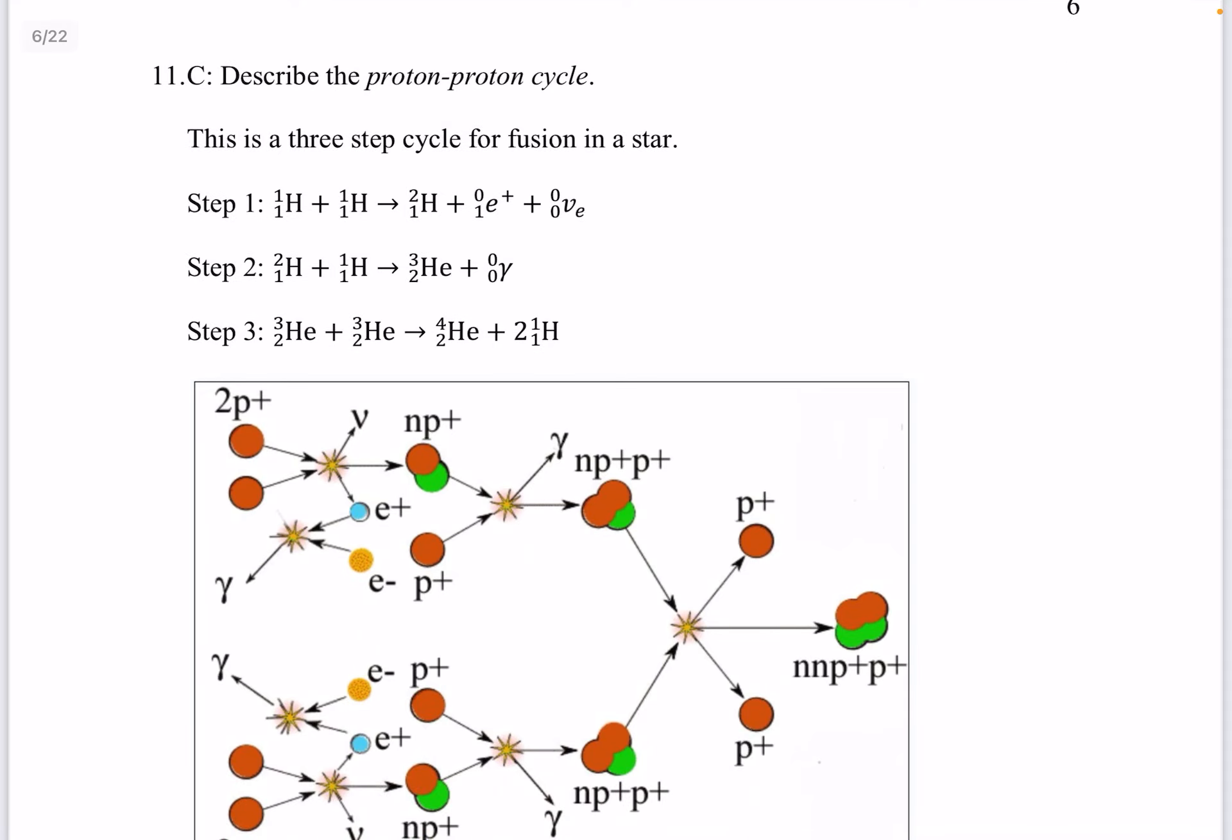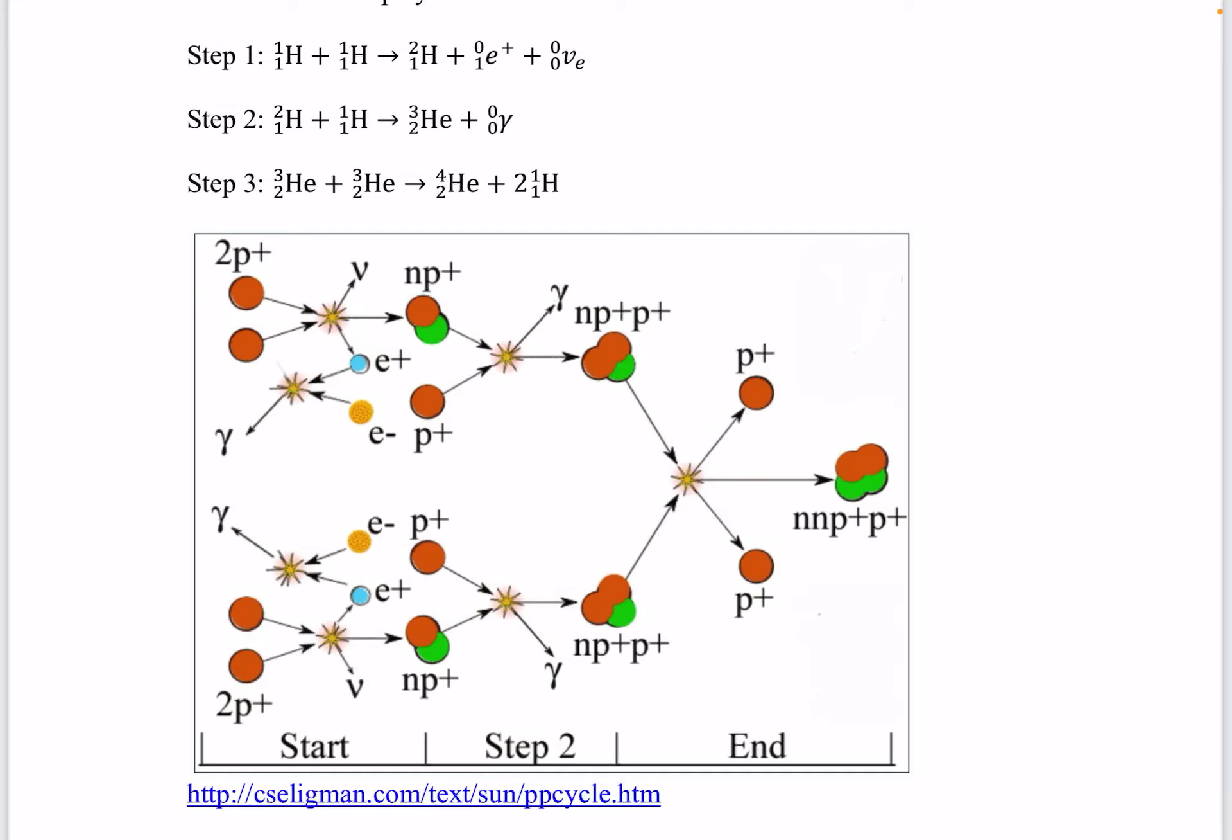Describe the proton-proton cycle. So please do memorize this. Write it down 10 times if you have to. This is a three-step cycle for fusion in a star. You have hydrogen plus hydrogen makes heavy hydrogen, deuterium. Then you have deuterium plus hydrogen makes helium. And then you have helium plus helium making helium plus two hydrogens. And then it's a cycle. Those two hydrogens from step three become the two hydrogens from step one. So maybe drawing this will help you better understand what's happening.